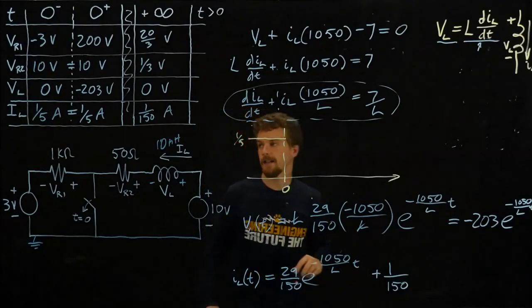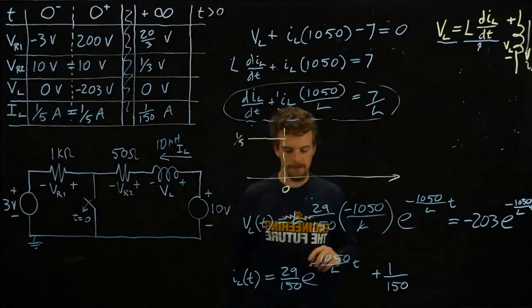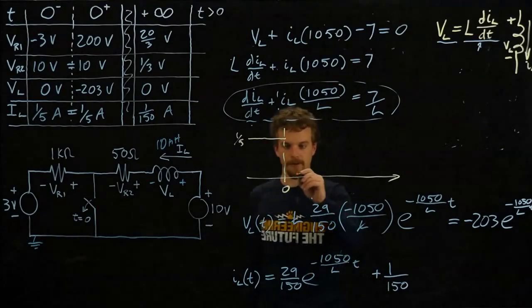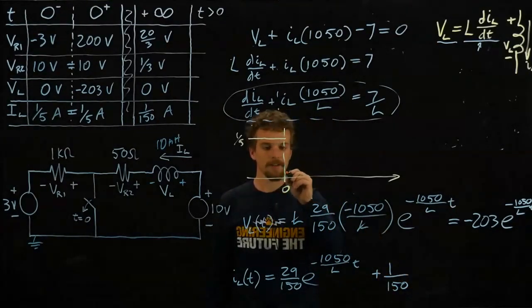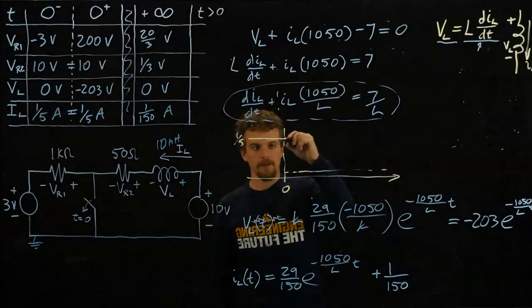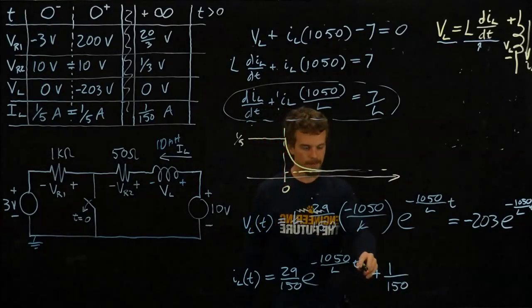Okay, so let's actually just look at what this qualitatively means for a second. So I'm going to try to draw real quickly what these two values, IL and VL, look like over time. So at t equals 0, there's a switch change, but it can't change instantaneously, so it's described by this equation. So it eventually settles down to 1 over 150, so it looks like this: exponential decay to that final value.